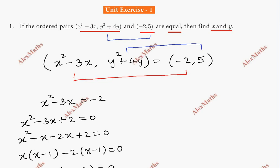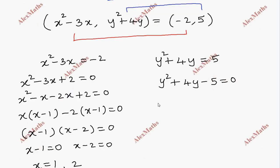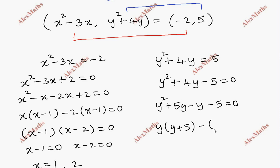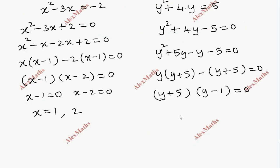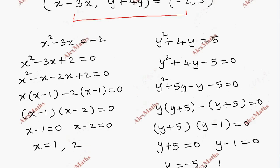For the second element, y²+4y equals 5, so y²+4y minus 5 equals 0. Splitting the middle term with product minus 5 and sum 4: factoring gives (y+5)(y-1) equals 0. So y value is minus 5 or y equals 1.